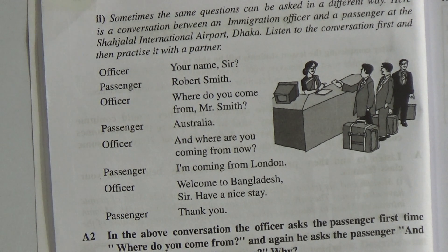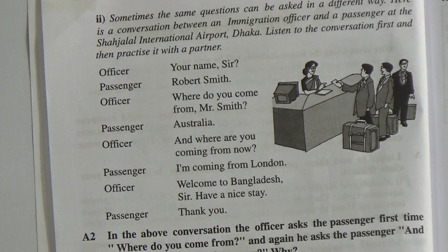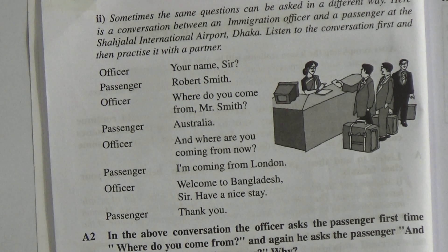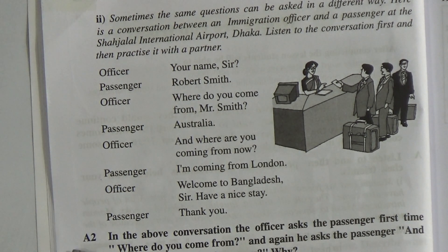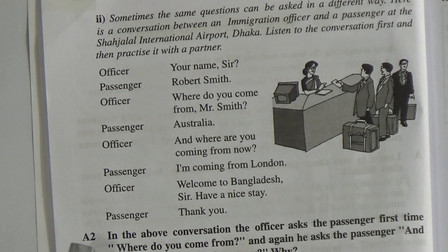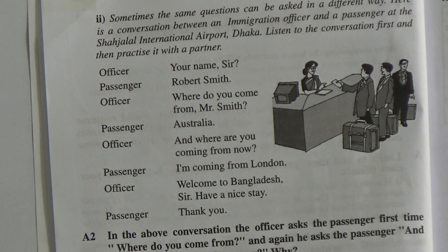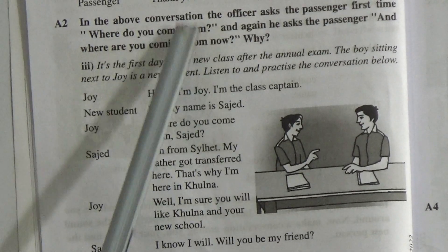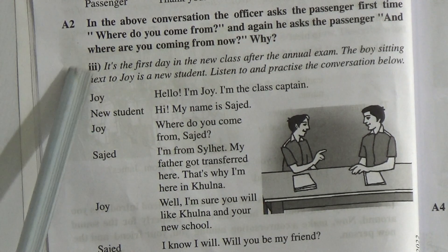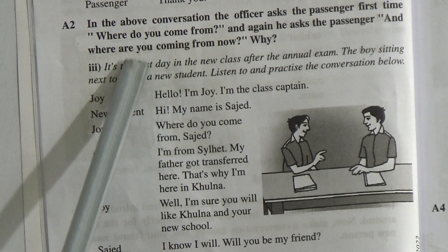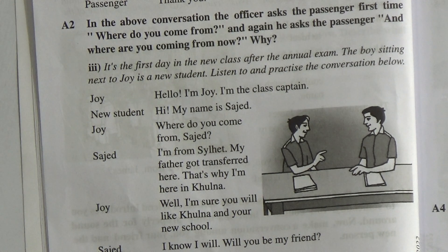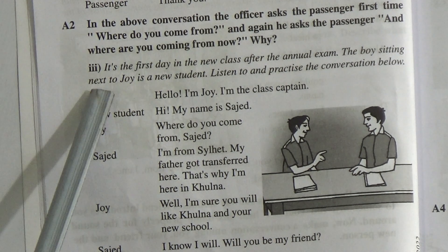If some incident like this between a passenger and officer happens to you, then you may continue the conversation like this. This is your learning from this lesson. There is also another conversation. In the above conversation, the officer asks the passenger first: Where do you come from? And again he asks: And where are you coming from now? Why? So this is the question.